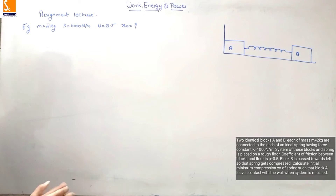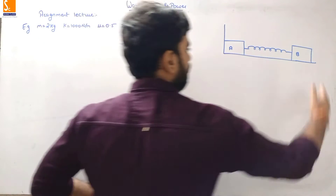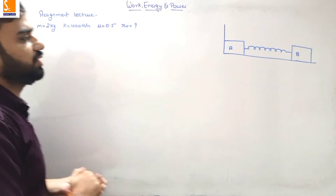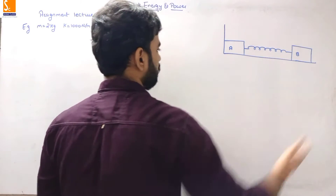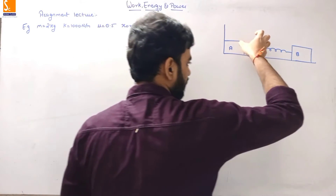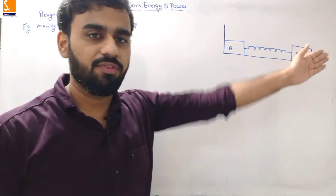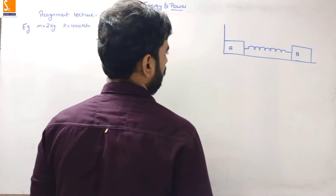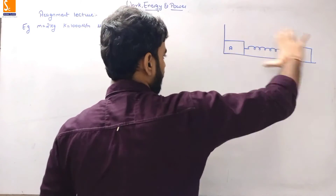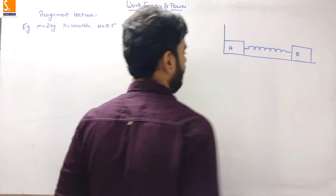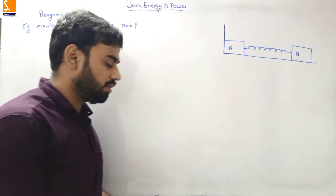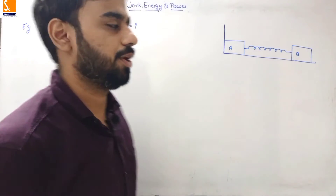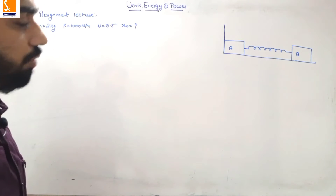To understand the question: first block B is pushed towards the left, causing spring compression. When the external force on block B is removed, the spring force pushes block B to the right. As block B moves right, the spring elongates, and this spring force pulls block A to the right. We need to find the minimum compression so that block A just leaves the wall.